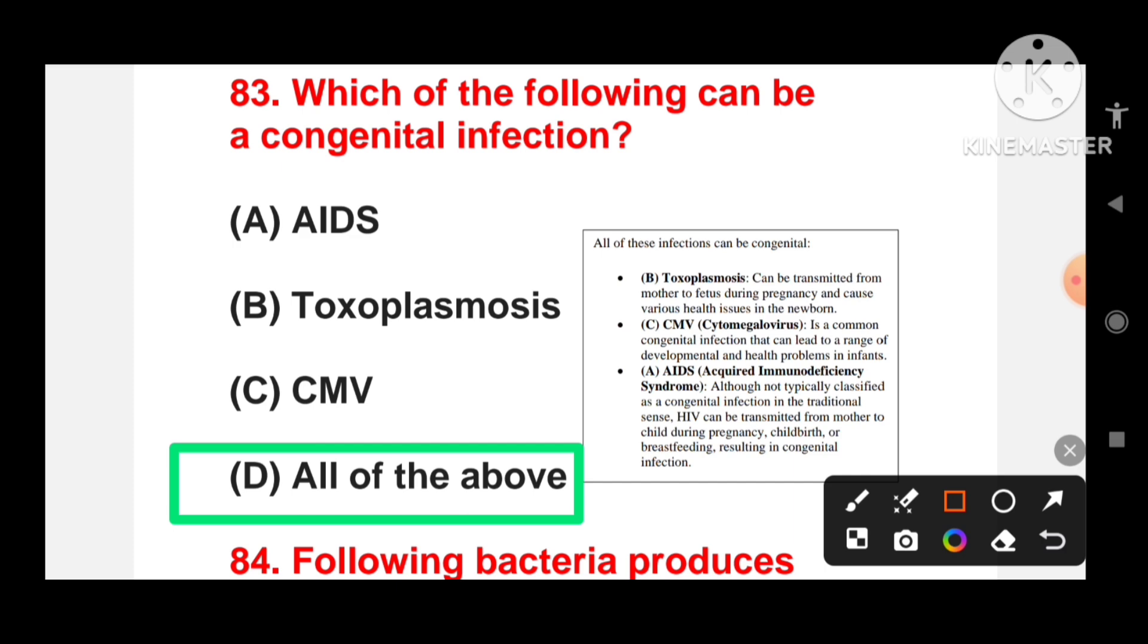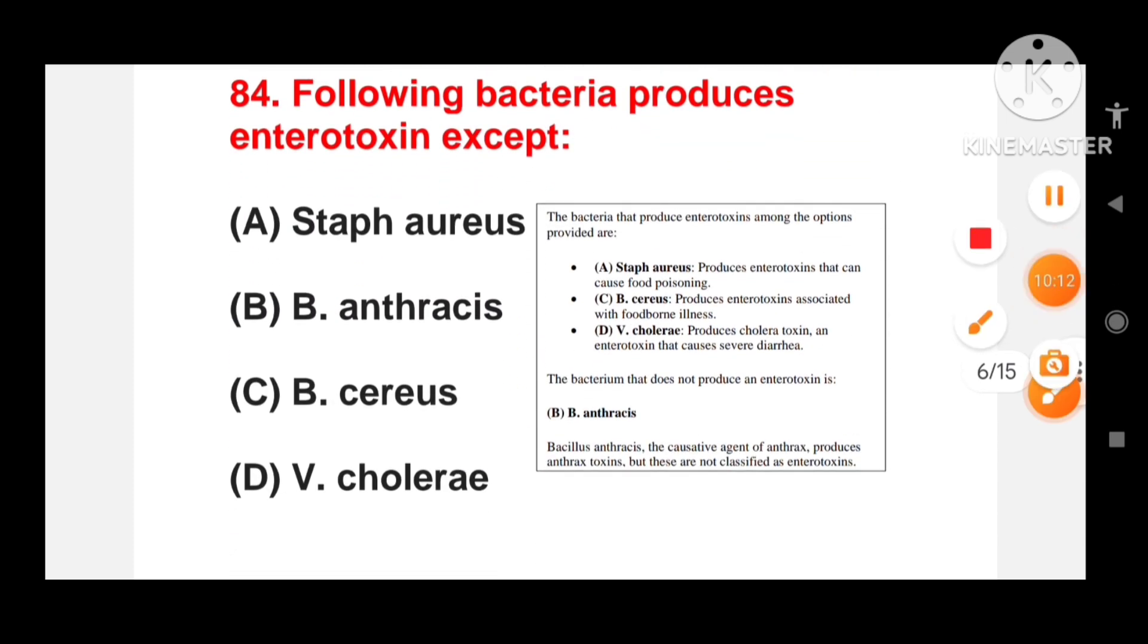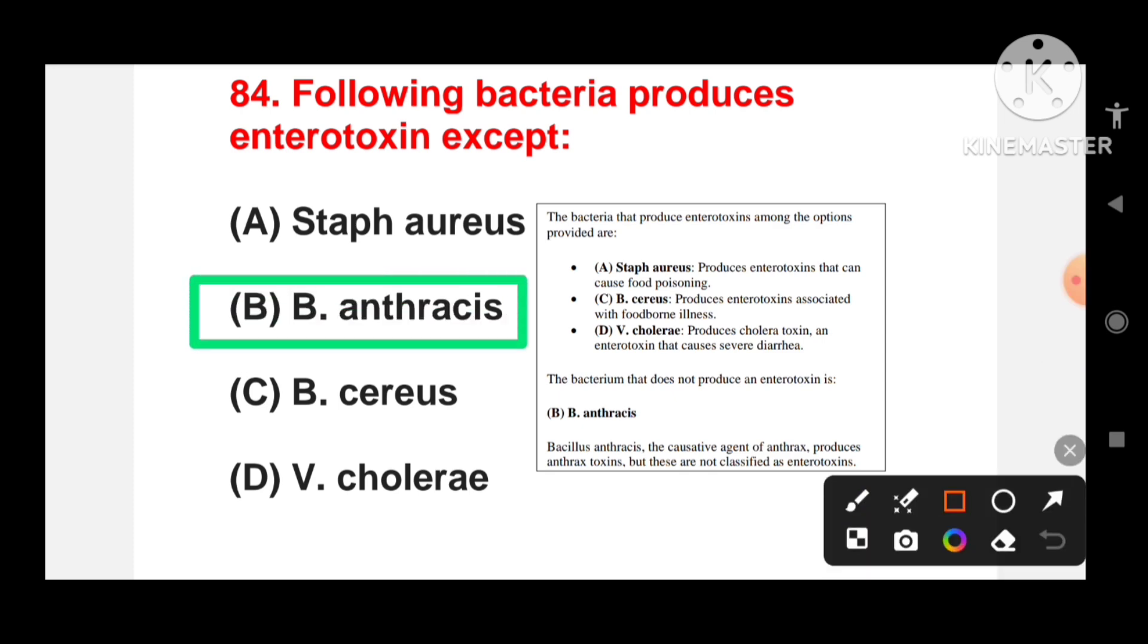Following bacteria produce enterotoxin except: Staphylococcus aureus, B. anthracis, B. cereus, or Vibrio cholerae? The bacteria that produce enterotoxin except are Staphylococcus aureus, B. cereus and Vibrio cholerae. B. anthracis is the causative agent of anthrax and it produces the anthrax toxin, but these are not classified as enterotoxins. It produces anthrax toxin while the other bacteria produce enterotoxins.